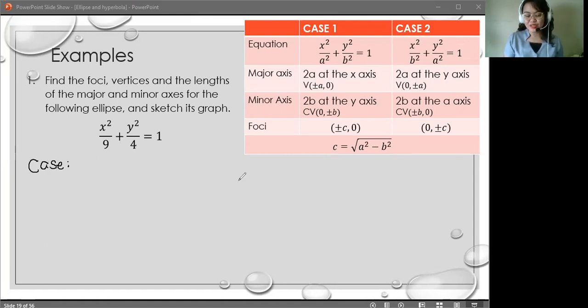For the case, we just have to look at the denominator of x squared and the denominator of y squared. If we have a denominator below x squared which is greater than y squared, then that means we have case 1 ellipse. Because if you would look at this, yung a nasa ilalim ni x, e alam natin na a is longer than b. So in this case, we have case 1.